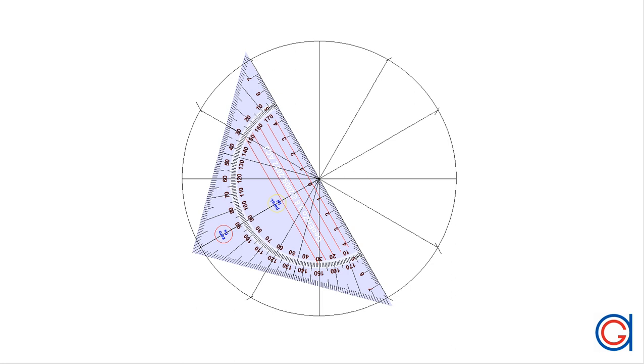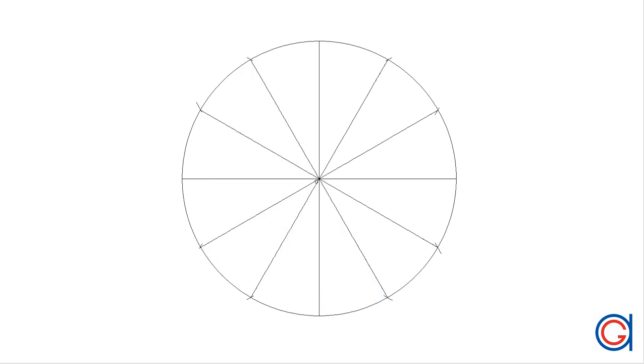So the next step is to divide the radius 0-12 into 12 equal parts. To do that, we are going to use Thales' theorem and also we're going to use red lines.